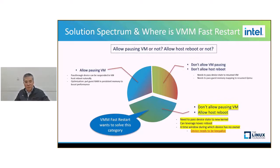First, don't allow host reboot. Then we can't update the kernel; we can only update userland components, typically QEMU. Here, we still need to preserve the state of the pass-through device to resume in QEMU. We also need to preserve the guest memory mapping across the restart. Steve from Oracle also had a proposal for this case.